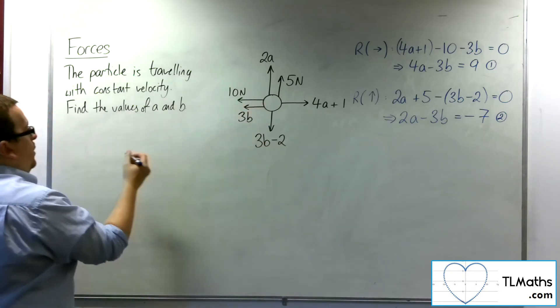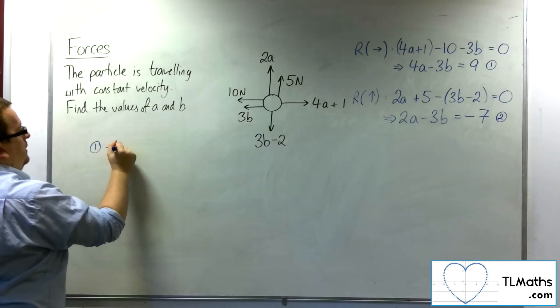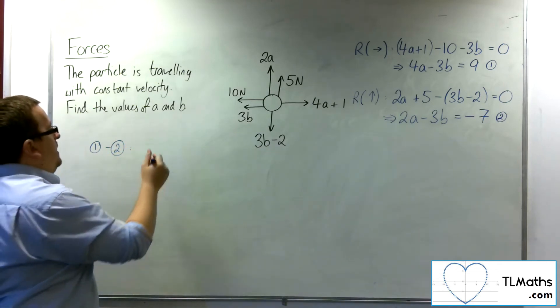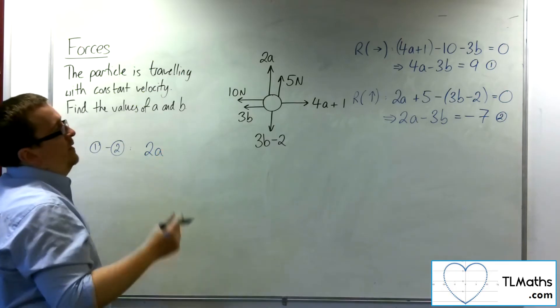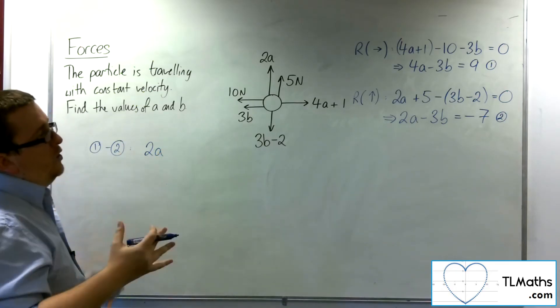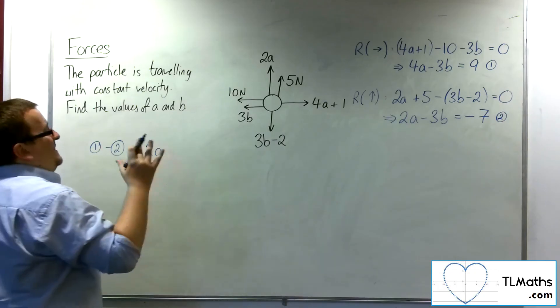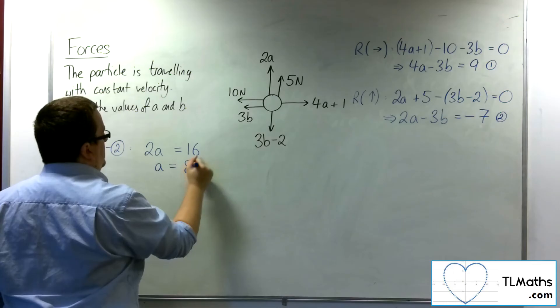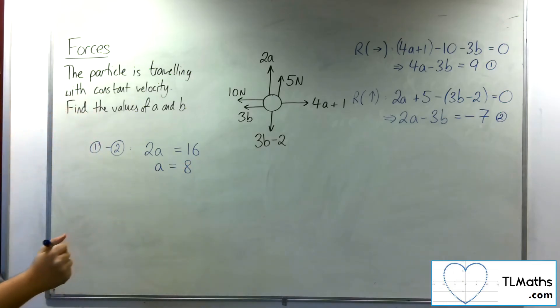So what I'm going to do is equation 1 take away equation 2. So I'm going to have 4A take away 2A. So 2A. The minus 3B take away minus 3B is 0. 9 take away minus 7 is 16. And so A is 8.